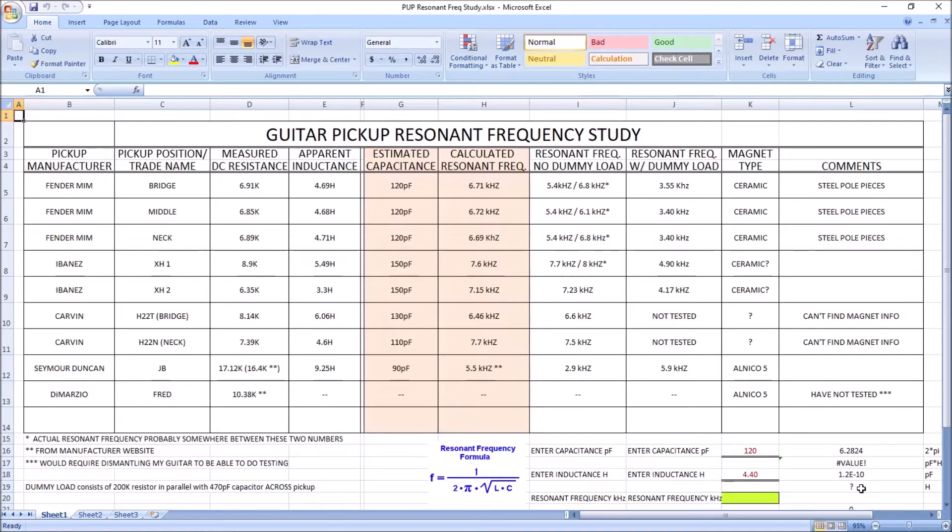And that's how I came up with these capacitances. The only pickup that I actually had a resonant frequency number for was the Seymour Duncan JB, and my measurements unloaded came within 400 hertz of their published data. However, the DC resistance that I measured is a little different than theirs, so that could explain why I came up with 5.9 kilohertz versus their published 5.5 kilohertz.